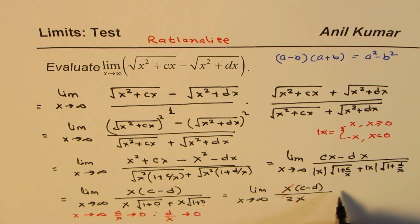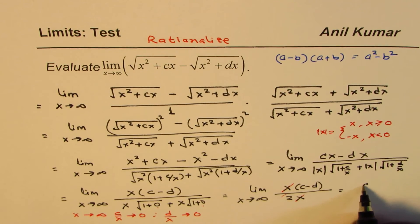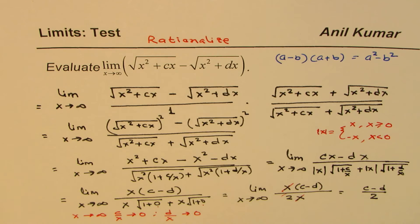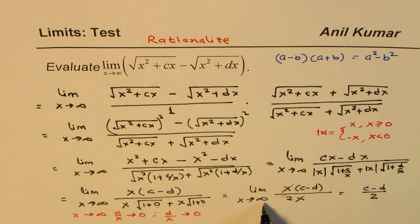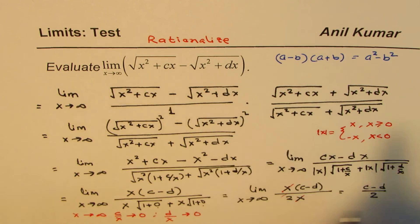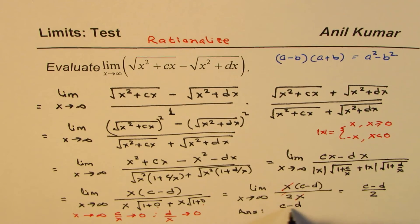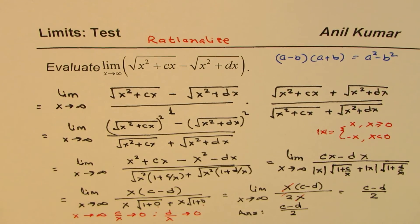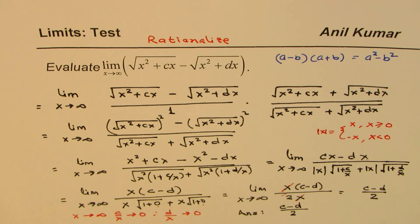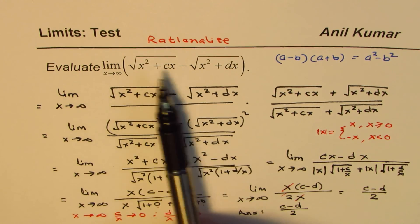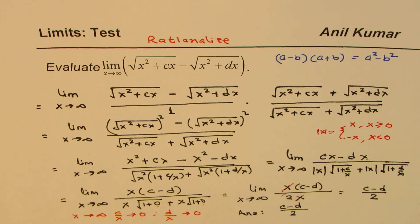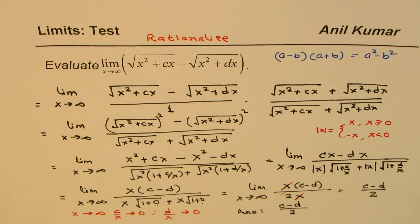So the answer is c minus d divided by 2. The limit of this function when x approaches infinity is the difference of c and d, divided by 2. This is a very general solution for this type of question. I hope these steps are absolutely clear. I'm Anil Kumar — feel free to share, subscribe, post questions, and put some likes if you like. Thank you, and all the best.